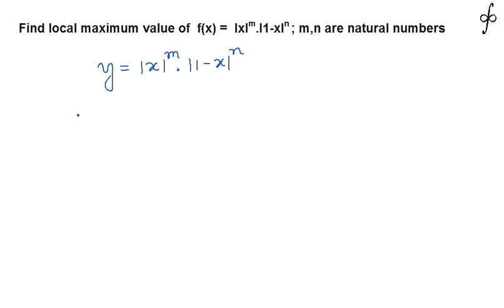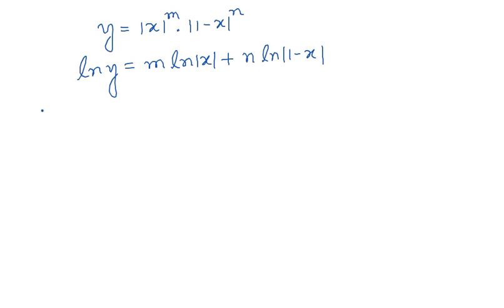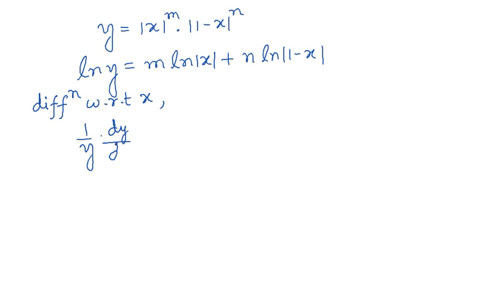If we take log on both sides, ln(y) = m·ln|x| + n·ln|1-x|. Now we differentiate both sides with respect to x, giving us (1/y)·(dy/dx) on the left side.